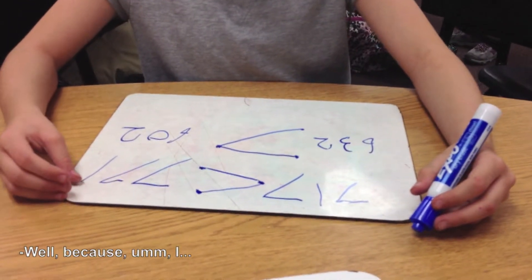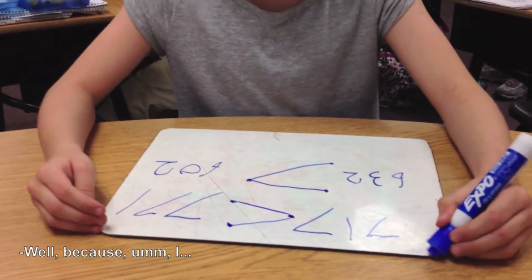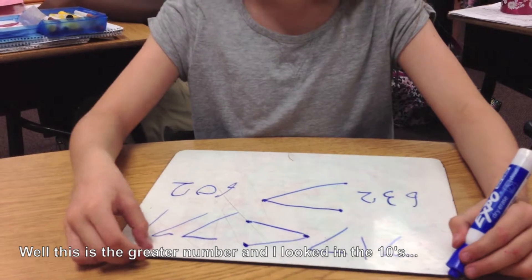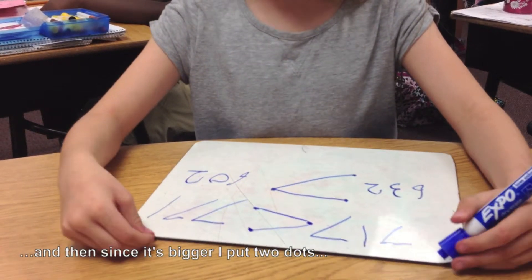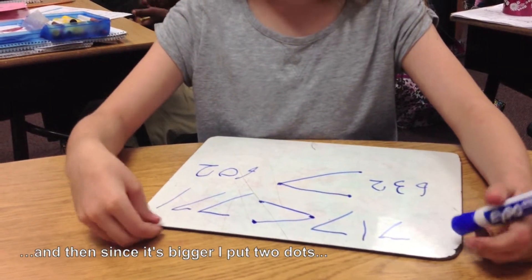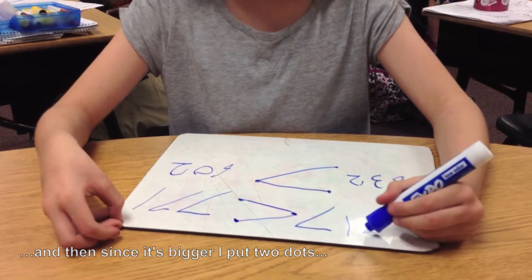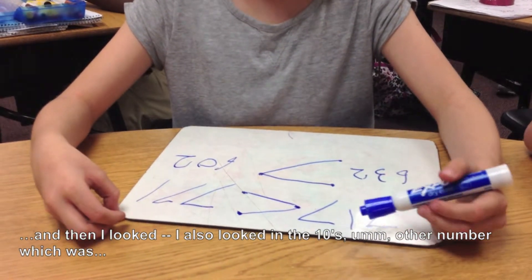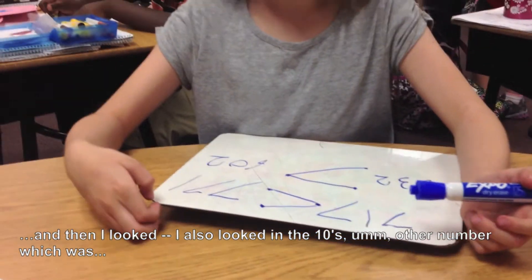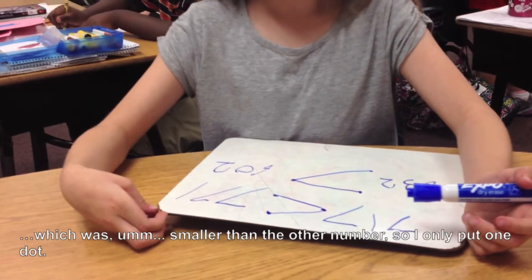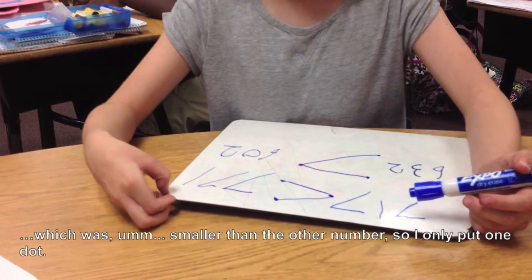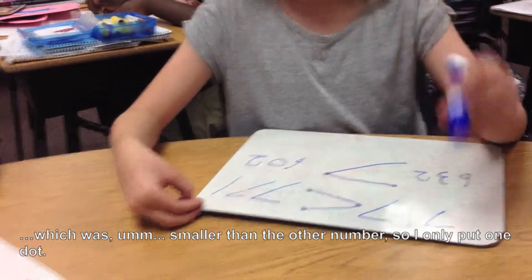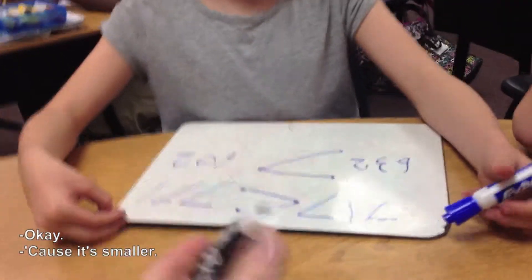Well, this is the greater number and I looked in the tens and then since it's bigger I put two dots. And then I also looked in the tens, another number, which was smaller than the other number, so I only picked one dot. Okay. Because it's smaller.